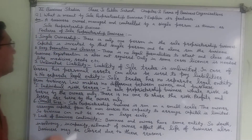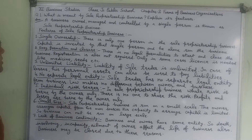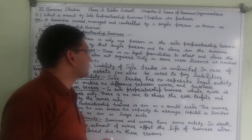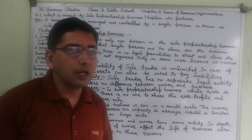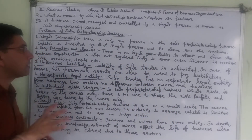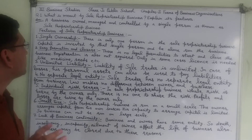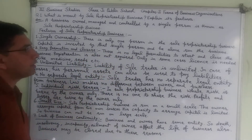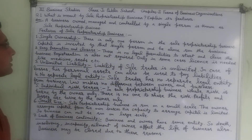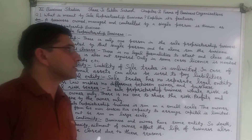The first feature of sole proprietorship business is single ownership. There is only a single person in the business. All capital is invested by that single person. He manages the business alone. So there is only one person in the sole proprietorship business who invests capital and runs and manages the business.